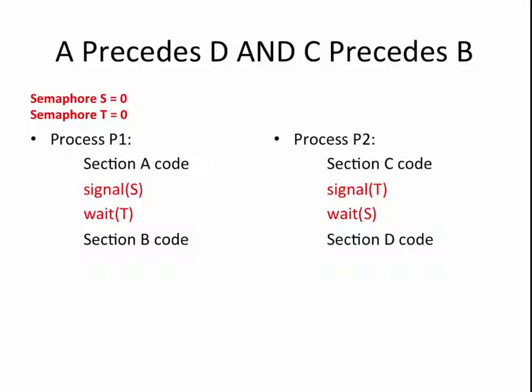Since the semaphores are initialized to zero, the wait(S) will not complete until P1 calls signal(S), at which point it has already completed section A. Similarly, the wait(T) will not complete until P2 calls signal(T), at which point it has already completed section C. So once the processes can get past their wait commands, we are guaranteed that both first sections of code have already run. We have also not forced any additional constraints by requiring A to run before C or C to run before A, and so on.